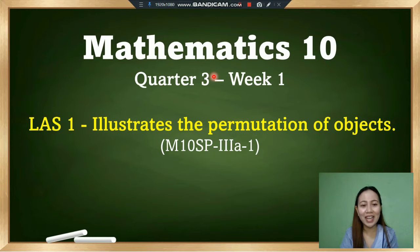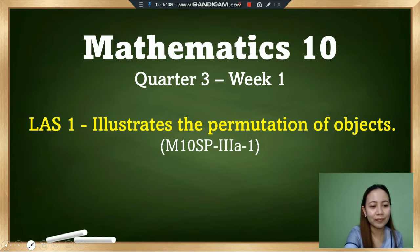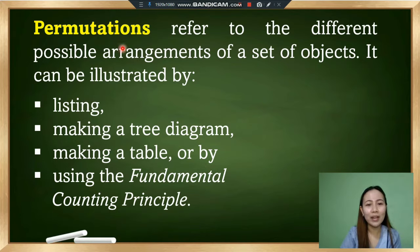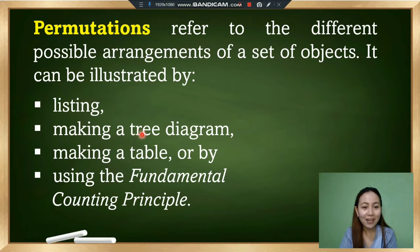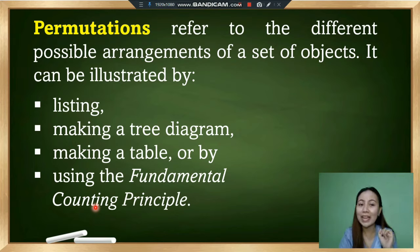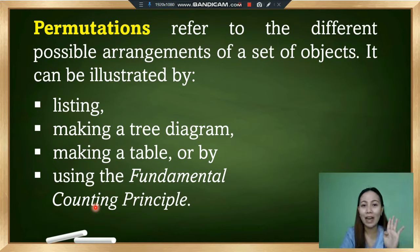To formally start our discussion, let's define what permutation is. When we say permutation, it refers to the different possible arrangements of a set of objects. It can be illustrated by listing, by making a tree diagram, by making a table, or by using the fundamental counting principle.